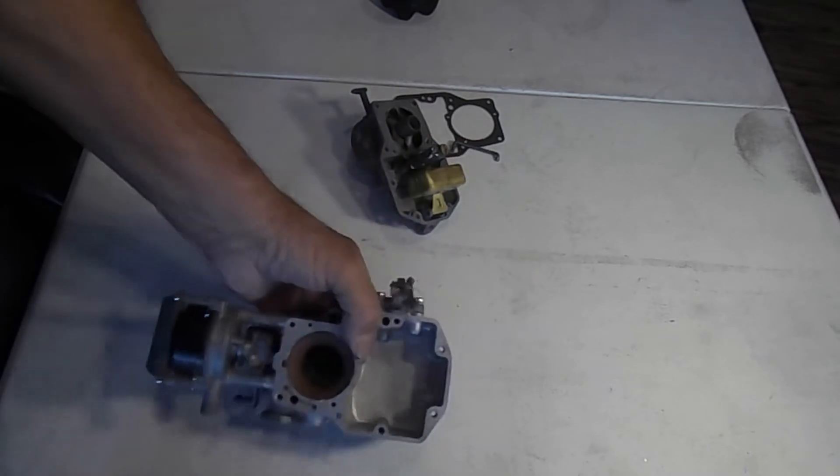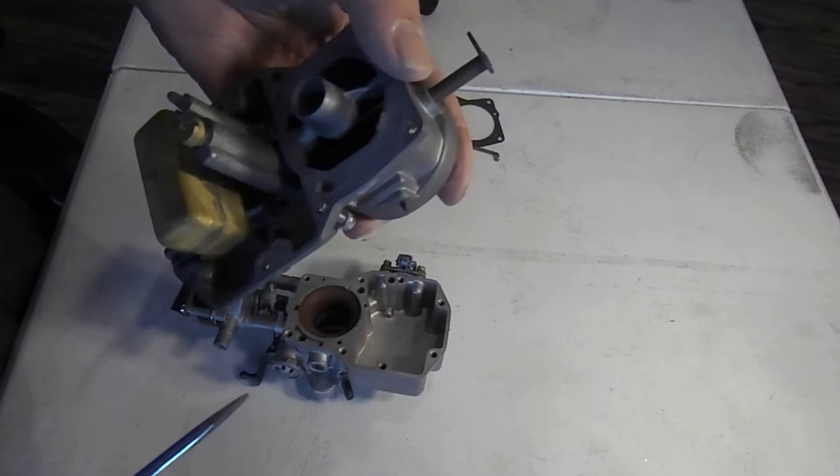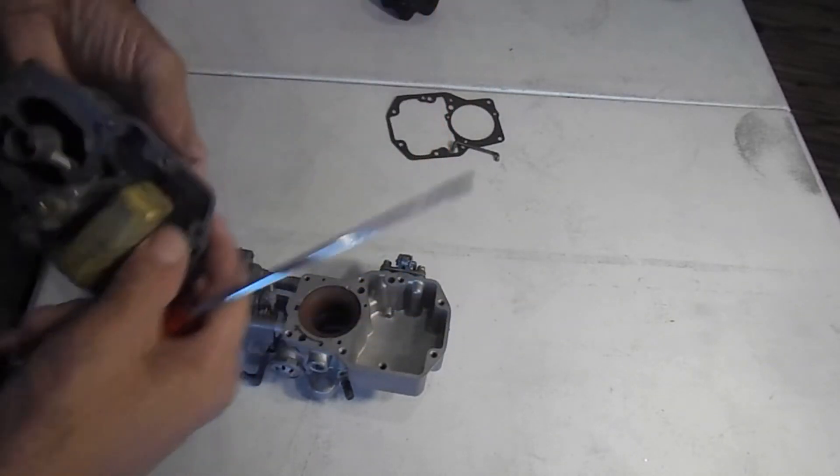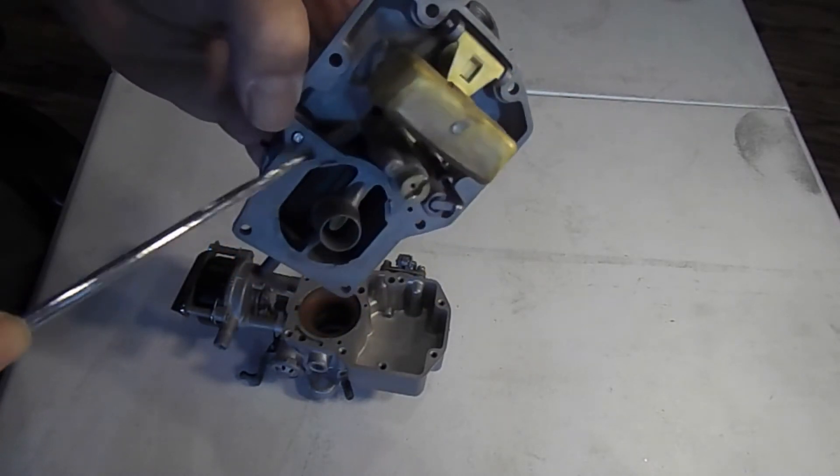Right there is a clean out if you ever have to clean out the idle mixture passageway. It's small, and right here is where it comes up through the body, that little hole there. Then it continues on to a restricted hole they call it, which is just a passageway with a restriction in it. When you blow through it you won't get a whole lot of air, but be sure you can blow through it. You got to make sure that's all clean.